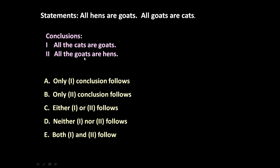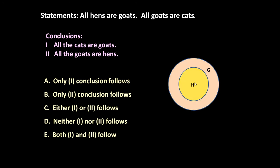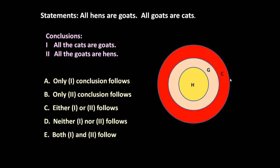Let us represent these statements through a Venn diagram. 'All hands are gods' means all the hands are inside gods — the outer circle represents gods and the inner circle represents hands. For the second statement, 'All gods are cats,' we draw a larger circle representing cats containing the gods circle. These are the two statements represented by a Venn diagram.